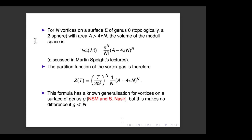The partition function turns out to be a prefactor depending on temperature times the volume of the moduli space. Remarkably, we know the volume. For N vortices on a genus-zero surface with area A greater than 4πN, the volume of the moduli space is essentially (A − 4πN)^N divided by N factorial. The N factorial comes from the indistinguishability of vortices. Using Samols' metric and Kähler geometry, one can work out the volume precisely via a cohomological calculation.